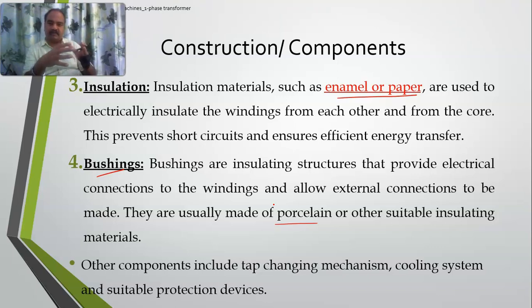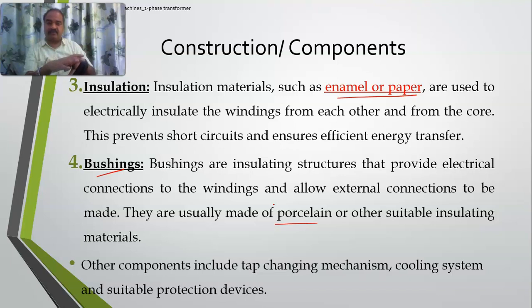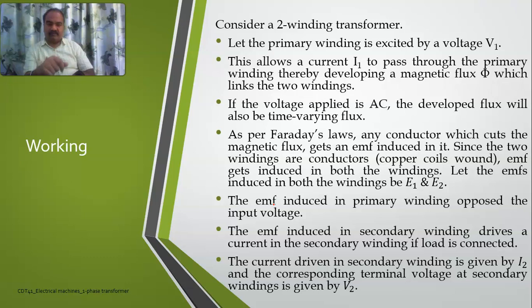Apart from these, you can have a tap-changing mechanism. If it is a large-capacity transformer you should provide cooling also, because large currents flowing may burn up the coil, so a cooling system is to be provided. Protection devices will also be used for faults. So the basic things are: the core, the coil, the insulation, and the bushings, and apart from these, other mechanisms will also be there for a transformer.